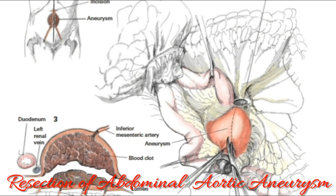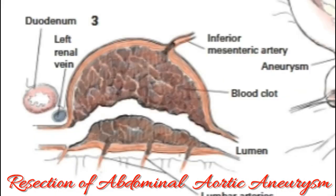Aortography is carried out if there is a question about the extent of the aneurysm, if distal occlusive disease is present, and when renal vascular disease or mesenteric insufficiency is suspected. A thorough cardiac evaluation with an electrocardiogram and imaging stress test is performed in elective resection of an aneurysm.